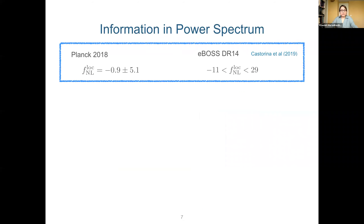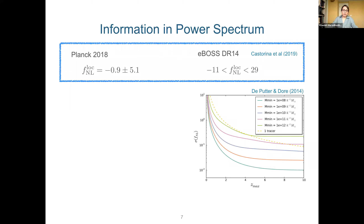The current best constraints on local-shape non-Gaussianity come from measurements of the galaxy power spectrum in eBOSS data, and these are still significantly weaker than constraints from the CMB. In the coming years, these constraints are expected to significantly improve from both power spectrum and bispectrum measurements. Let me review the maximum information included in the power spectrum and how we can go beyond it.